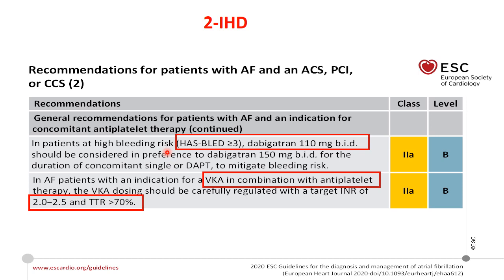We can also consider dabigatran 110 mg twice daily instead of 150 mg twice daily in combination with single or dual antiplatelet therapy to decrease bleeding risk. In AF patients with indication for vitamin K antagonist combined with antiplatelet therapy, vitamin K antagonist dosing should be carefully regulated with a target INR between 2 and 2.5 and time in therapeutic range more than 70%.